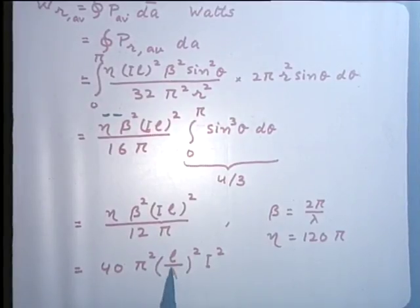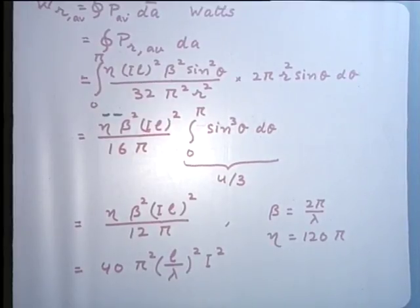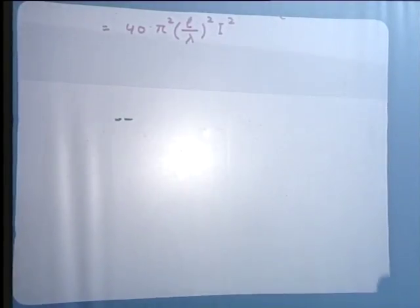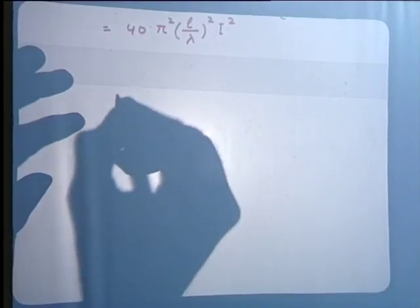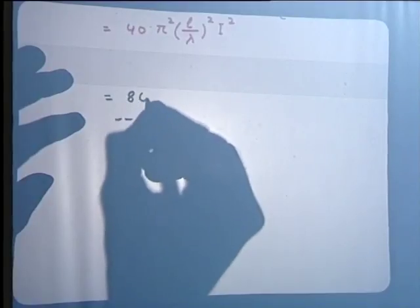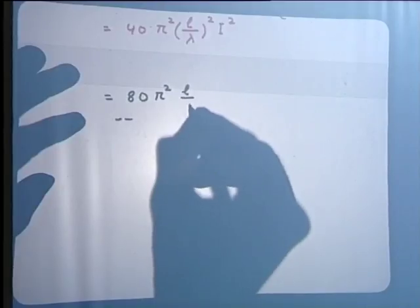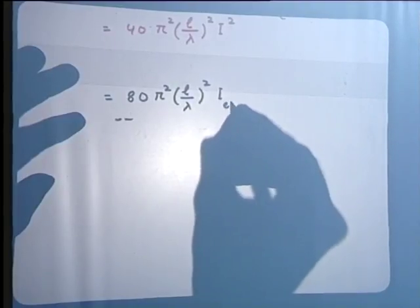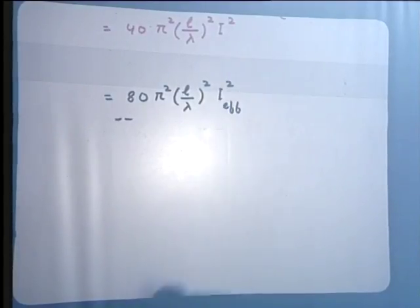The average radiated power can be rewritten by recalling that beta = 2·pi/lambda, and eta = 120·pi for free space. On that basis, the average radiated power becomes 40·pi²·(L/lambda)²·I², expressed in terms of the current fed to the antenna and the size of the antenna relative to the wavelength.